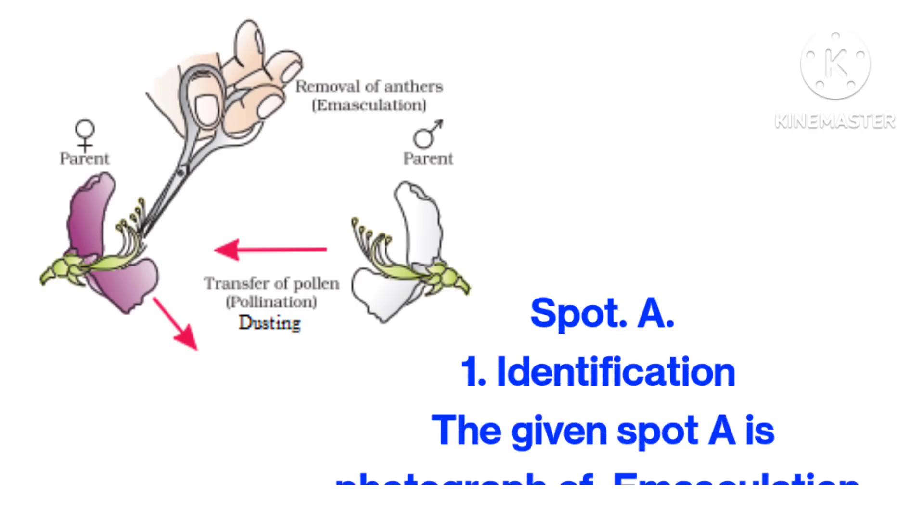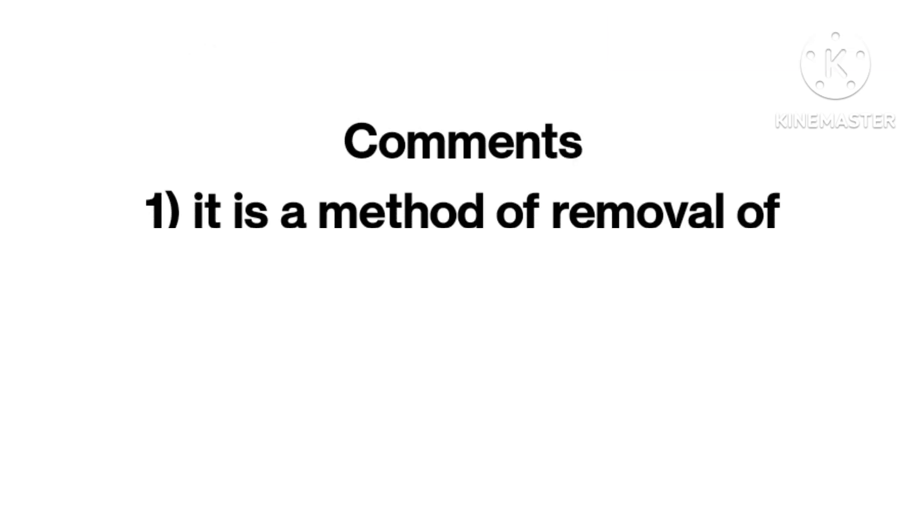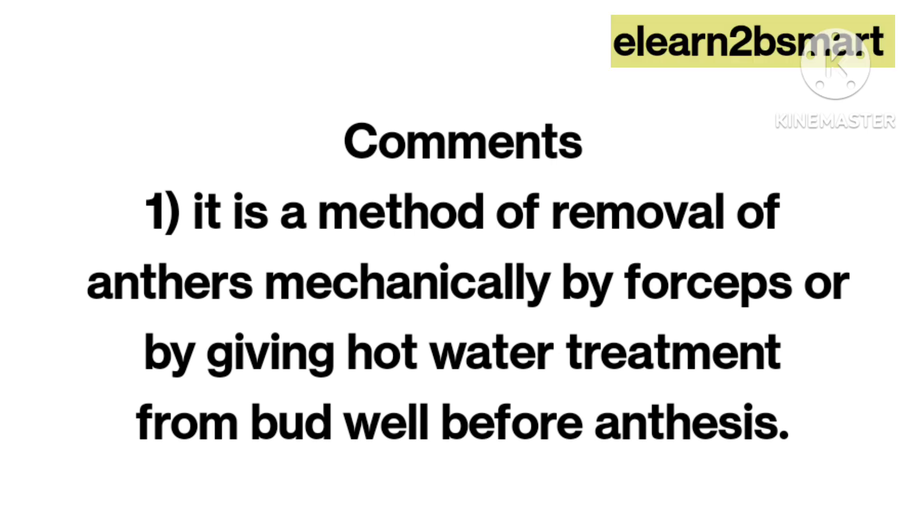Question for spotting spot A1. Identification: The given spot A is a photograph of emasculation. Comments: It is a method of removal of anthers mechanically by forceps or by giving hot water treatment from bud well before anthesis.